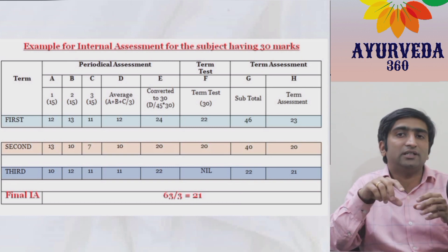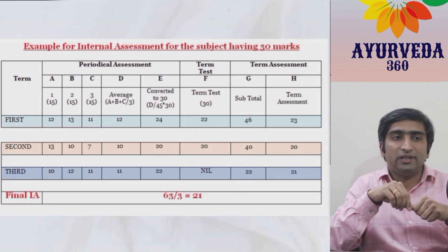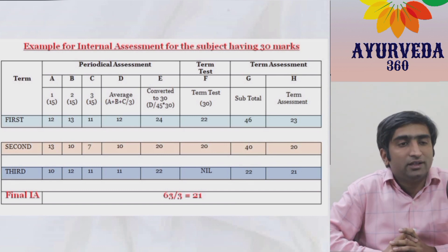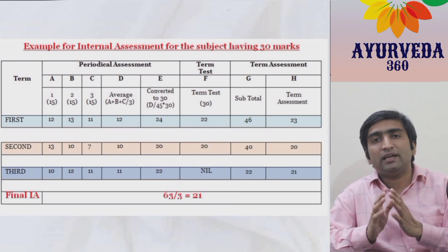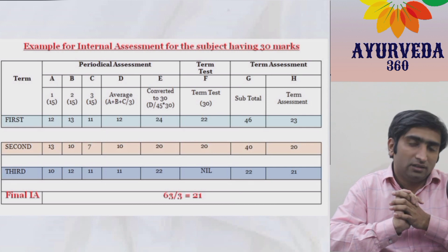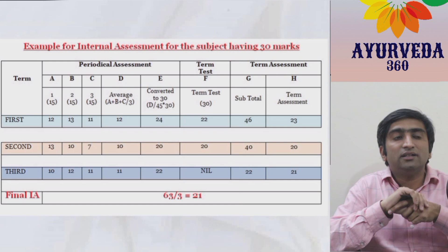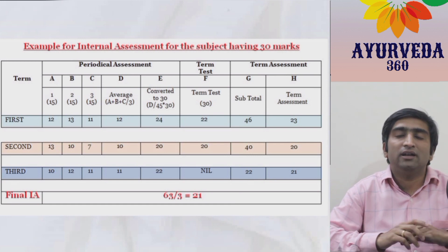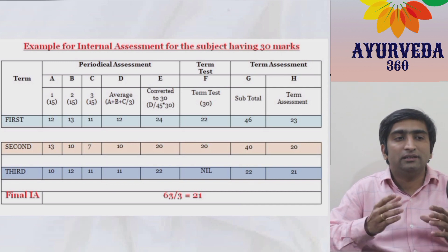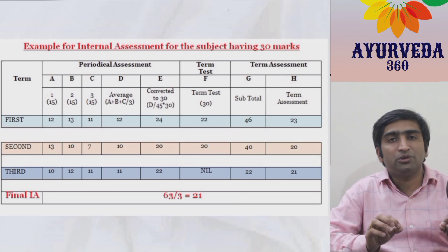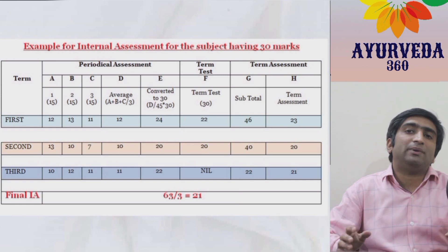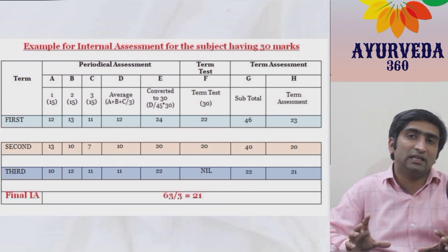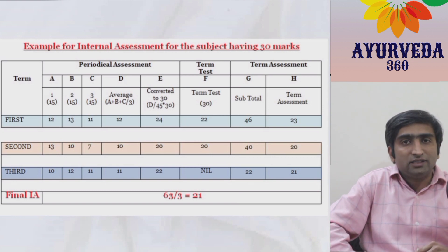If the term test score is 22 out of 30, then 24 and 22 are added and averaged, giving a first-term internal assessment mark of 23 for that subject. Similarly, averages are taken for the second and third terms. In the third term, there is no term test, so the periodic assessment marks serve as the term assessment directly. The student in this example ends up with 21 out of 30 overall; if the paper has only 15 internal assessment marks, the student gets 10.5 out of 15.